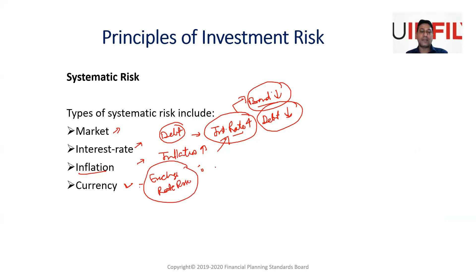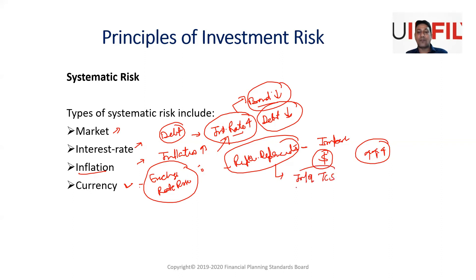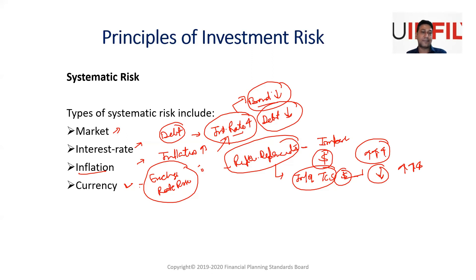Currency risk is essentially exchange rate risk. When the rupee depreciates, it can heavily impact companies that import from overseas — they have to pay in dollars and will need to spend more rupees. On the other hand, companies like Infosys and TCS benefit because they receive payments in dollars, and when they convert those dollars to rupees in India they get more rupees. Currency risk cannot be controlled by an individual investor — it exists in the economy and can impact full markets.